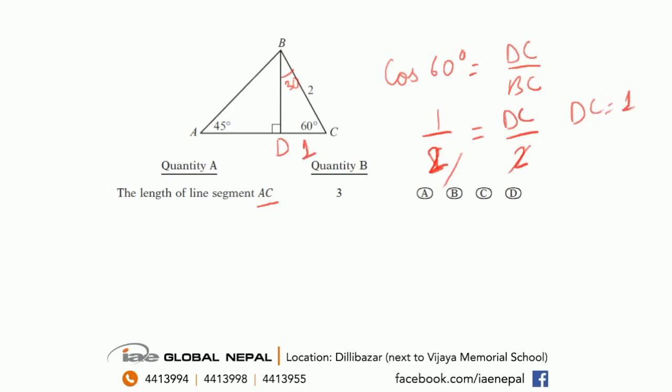You would probably do sin of 60 is equal to BD by BC. Root 3 by 2 is equal to BD by 2. The 2s cancel. BD is equal to root 3. Right, so this will also be equal to root 3 since this is a 45-45-90 triangle.